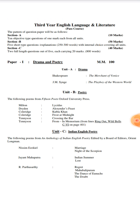In the first paper, Drama and Poetry, there are three sections: Section A, B, and C. In Section A, there are two plays — The Merchant of Venice by William Shakespeare, and The Playboy of the Western World by J.M. Synge.